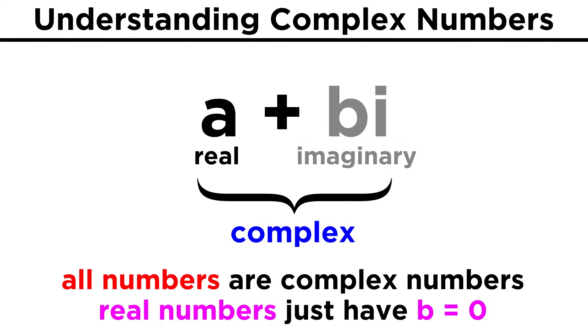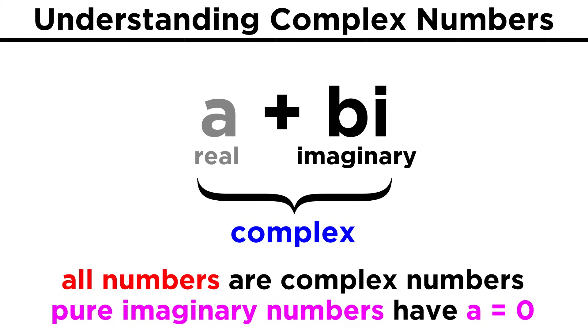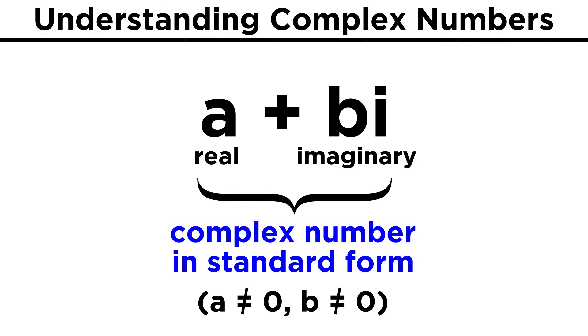In this way, all numbers are technically complex numbers, because if b is zero, the imaginary part goes away and we just have a real number. If a is zero, we have a pure imaginary number, as there is nothing real about it. But if a and b are both nonzero, we have a complex number in its standard form.